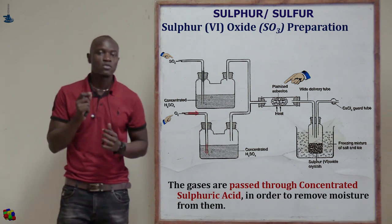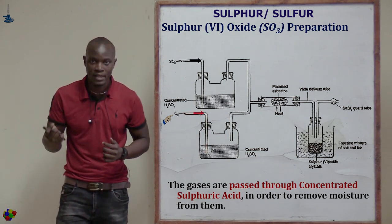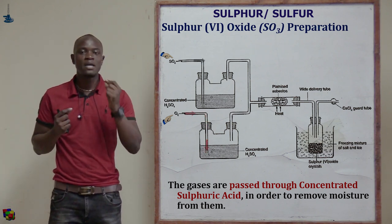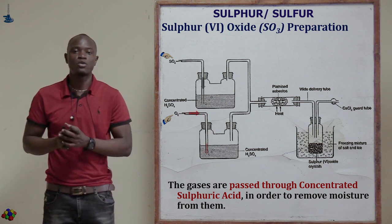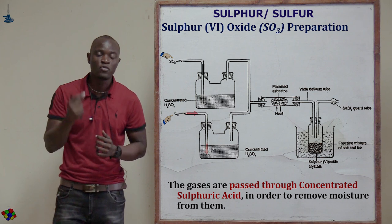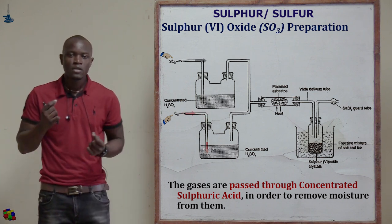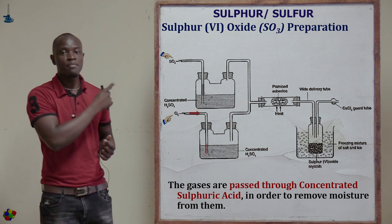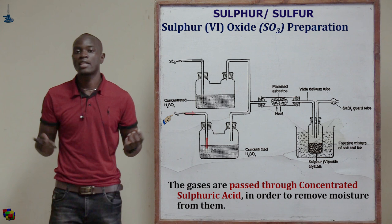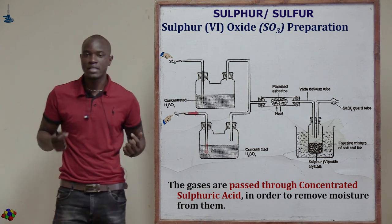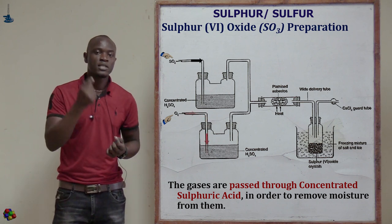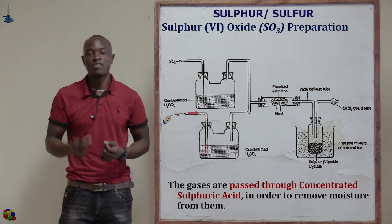So why are these gases first being passed through concentrated sulfuric acid? In chemistry, when any gas is passed through concentrated sulfuric acid, it means the concentrated sulfuric acid is going to remove traces of water vapor from that gas. So the concentrated sulfuric acid is acting as a dehydrating agent to remove the excess water vapor found in the sulfur 4 oxide.